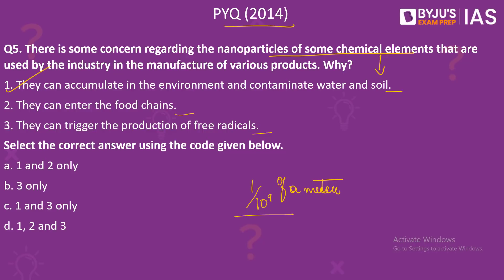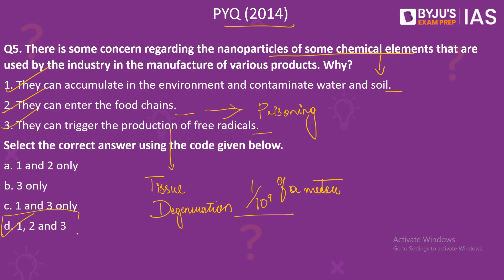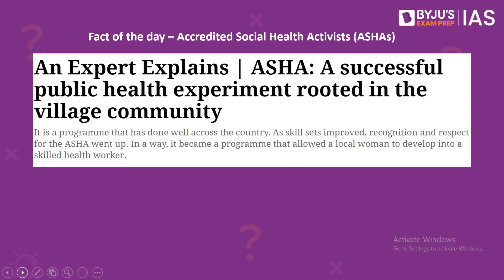Nanoparticles can also enter into food chains and create cumulative poisoning, so Number 2 is correct. Free radicals are atoms or groups of atoms with at least one unpaired electron. Studies have proved that nanoparticles can trigger production of free radicals, and the chronic release of such reactive molecules can lead to tissue degeneration. So Number 3 is also correct. The answer to our question is option D: 1, 2 and 3.